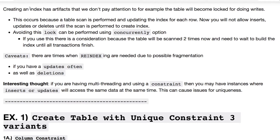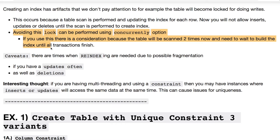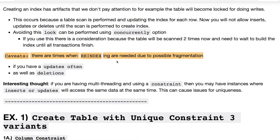There are artifacts you need to pay attention to. This occurs because a table scan is performed when updating the index for each row. You're not able to do any updates because you're locking the table, so any updates, deletes, or inserts won't be performed while you have this lock. Using CONCURRENTLY avoids this lock, but now you're performing two table scans instead of one. You also need to wait for transactions to finish before the index build occurs. When you're often updating, consider re-indexing because of possible fragmentation, and the same applies if you have frequent deletes.